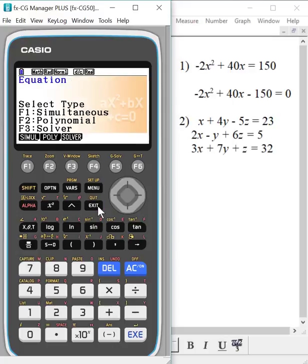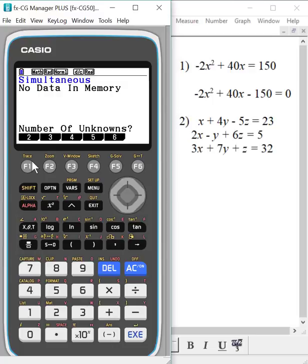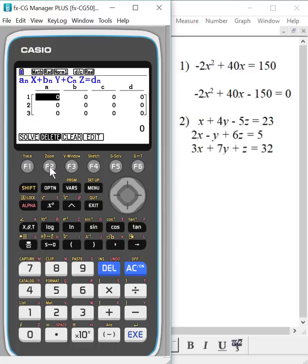So let's go back to our other option, which was solve simultaneous, so more than one. So we're going to hit F1 this time, because simultaneous is F1. And how many unknowns do I have? Well, I have X. I have Y. I have Z. So I have three unknowns. So notice, again, you can go up to six unknowns.